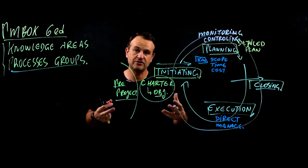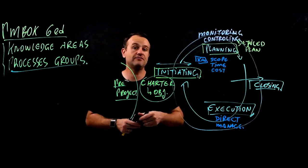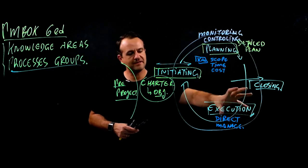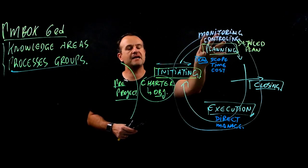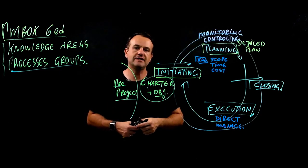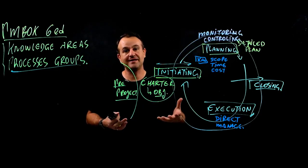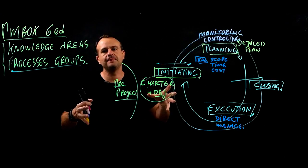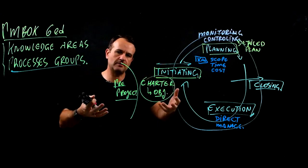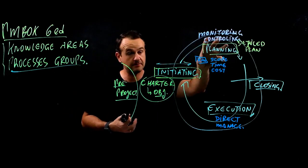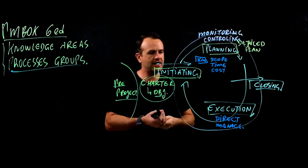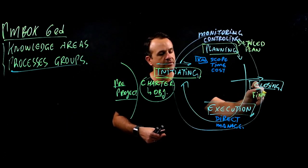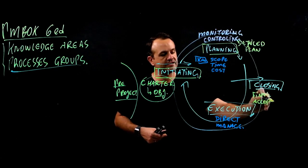In Monitoring and Controlling we manage changes, we manage documents, we manage all the aspects — not only from a performance point of view (whether the project is behind schedule, ahead of schedule, spending more or less), but also managing change. Every time we have a change, we need a change management process called Integrated Change Control, where we identify the impact of the change, go through an approval process, update the plan, and then execute. In the end we have final acceptance and closing.